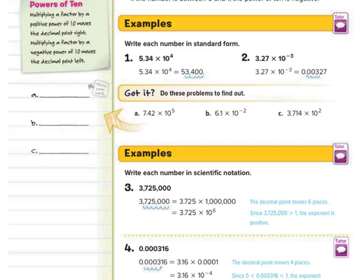But if the exponent is negative — for example, 3.27 times 10 to the negative 3rd — we move the decimal point to the left 3 times, and we end up with 0.00327.